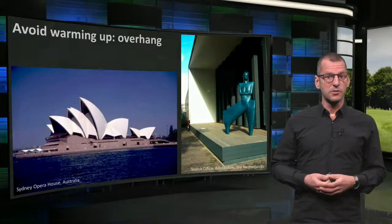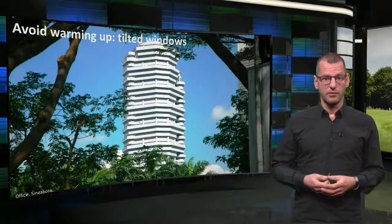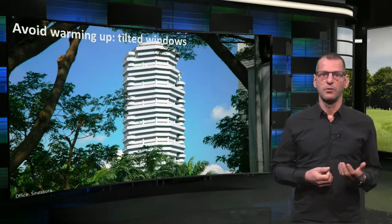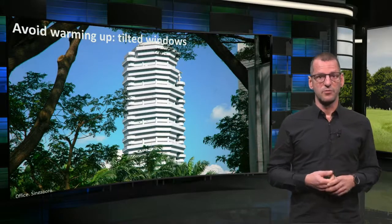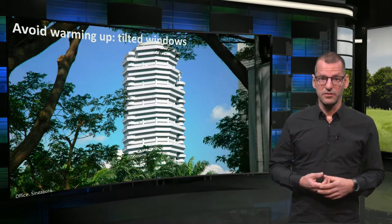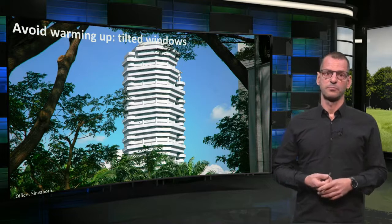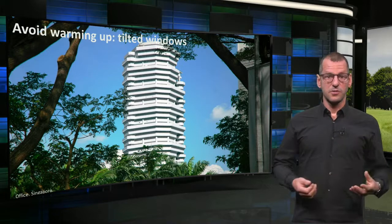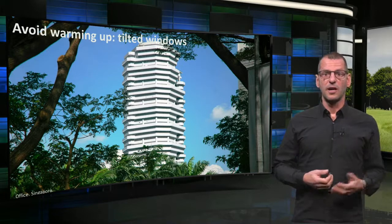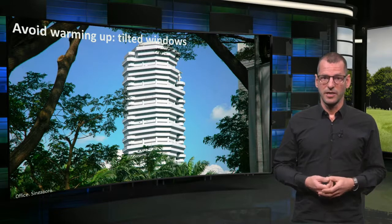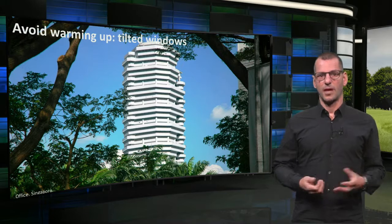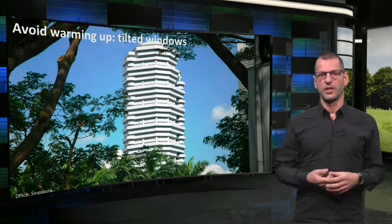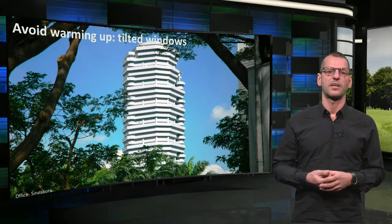Yet another solution can be seen here, again in Singapore, where this office tower was designed with windows tilting downwards. As a result, there is hardly any direct sunlight reaching the interior, and people can still look downward from their office desks.